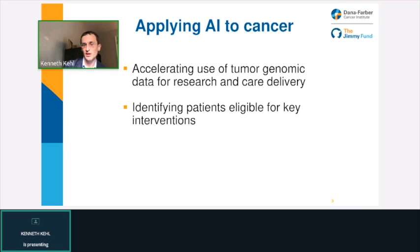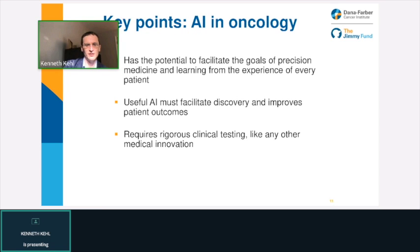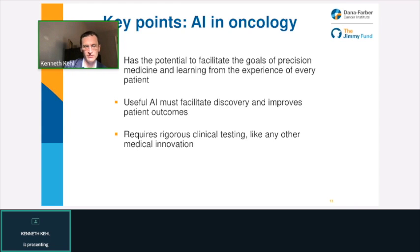AI can also be applied to train models that look at clinical images from CT scans to apply computer vision — potentially making a radiologist's work in finding an otherwise unrecognized lung cancer more straightforward. Given a record of imaging studies for a patient, models can learn to look for changes and highlight them for radiologists. This kind of work has been applied across cancer types and in other settings like mammography and cervical cancer screening, and could make these techniques more accessible in resource-poor settings. In summary, AI has the potential to accelerate the use of tumor genomic data for research and care delivery, facilitate precision medicine goals, and must be rigorously tested like any other medical innovation.